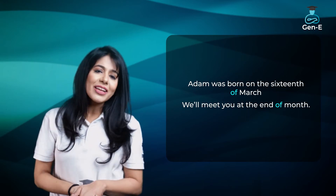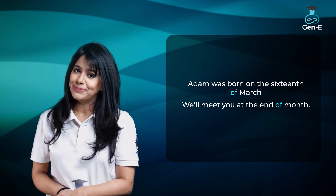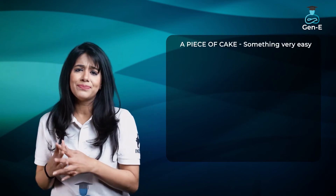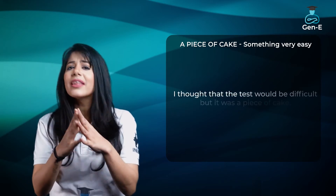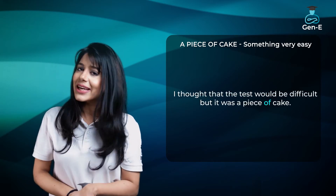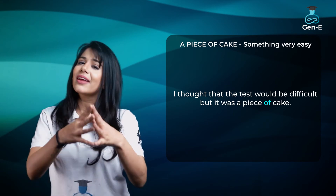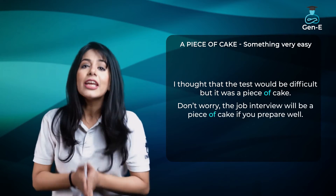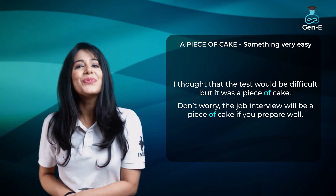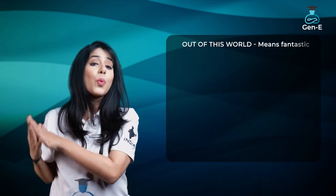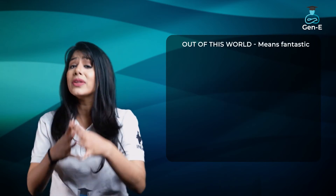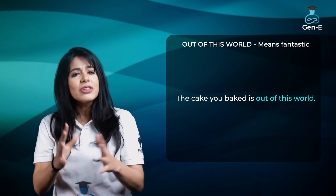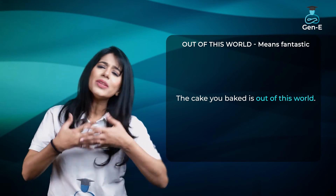Of ko hum bahut saare phrases aur idioms ke sense mein bhi use karte hain. Jaise, 'a piece of cake' — iska matlab hota hai jab kuch baat easy hoti hai. Jaise, 'I thought that the test would be difficult, but it was a piece of cake' — iska matlab hua ki test kaafi easy tha. Ya, 'Don't worry, the interview will be a piece of cake if you prepare well.' Next phrase is 'out of this world' — iska matlab hai when something is amazing and fantastic. Jaise, 'The cake you baked is out of this world' — matlab bahut hi amazing hai.